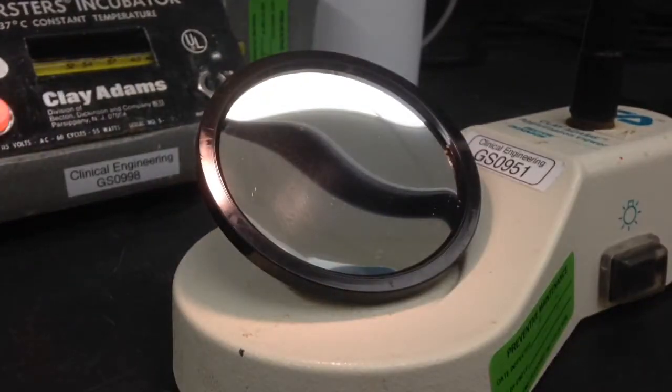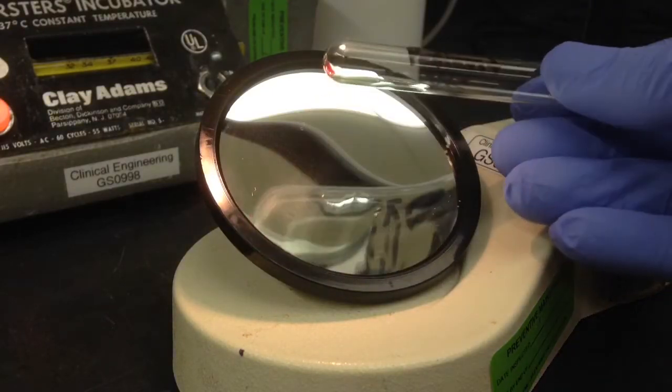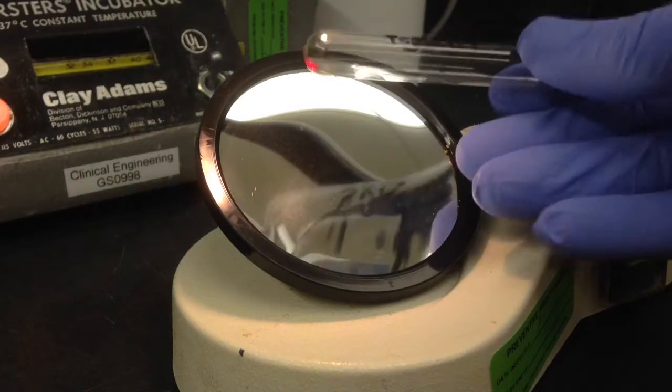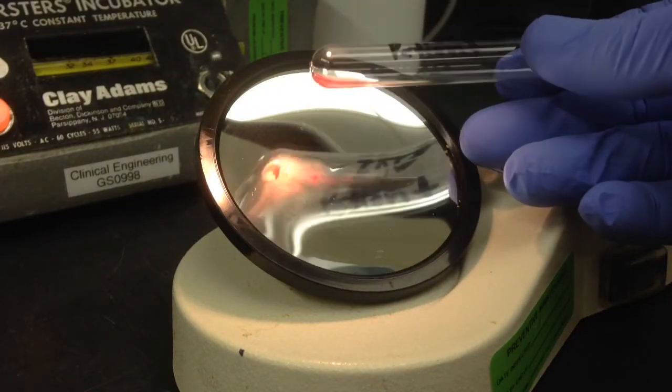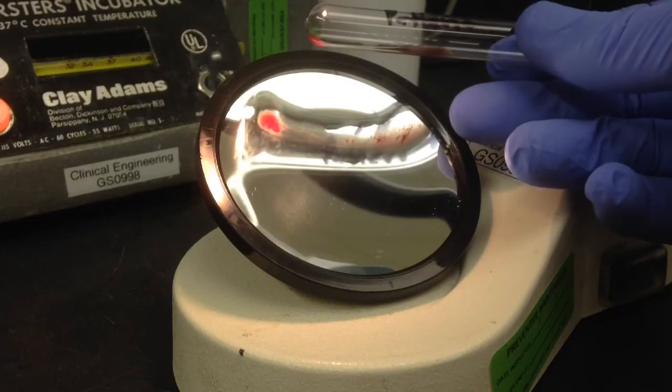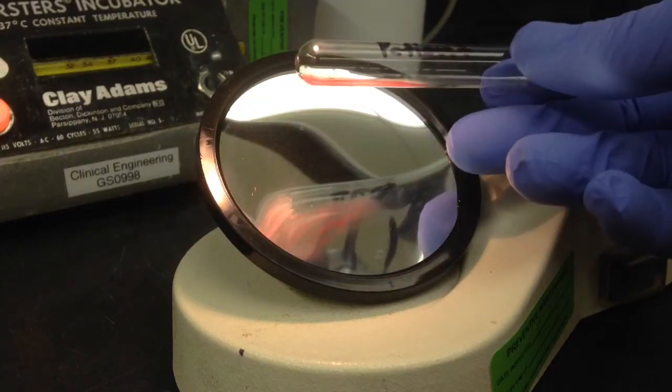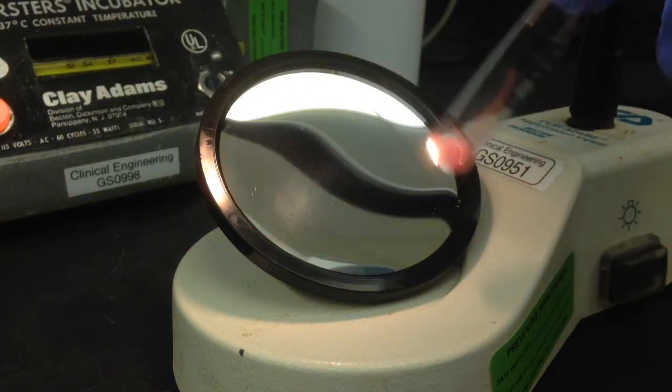If you forgot to wash the specimen, or didn't wash it well enough, or forgot to add your AHG, the check cell stage would be negative. So here I spun it in the centrifuge and I'm re-suspending it. You can see there's agglutination, which is a good sign. It means that everything was done correctly for the full crossmatch.